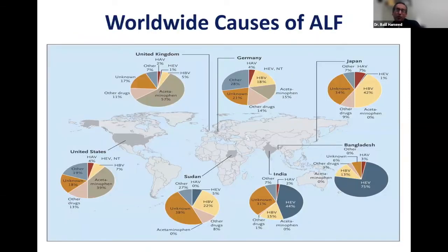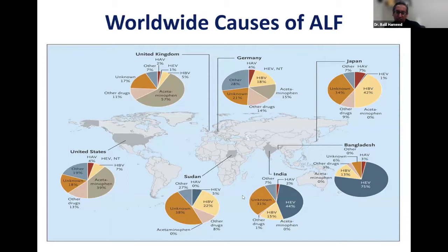When we look at worldwide causes of acute liver failure, there's a key paper in the New England Journal of Medicine from 2013 from King's College, Dr. Will Burnell, looking at worldwide causes across the U.S., United Kingdom, Germany, Japan, Bangladesh, India, and Sudan.